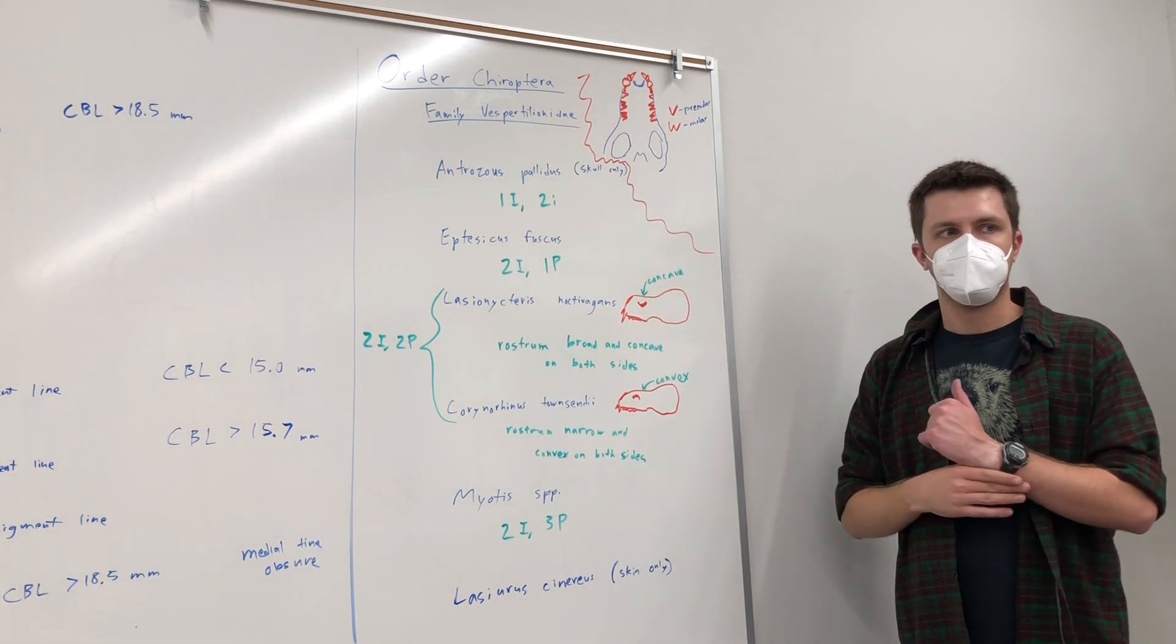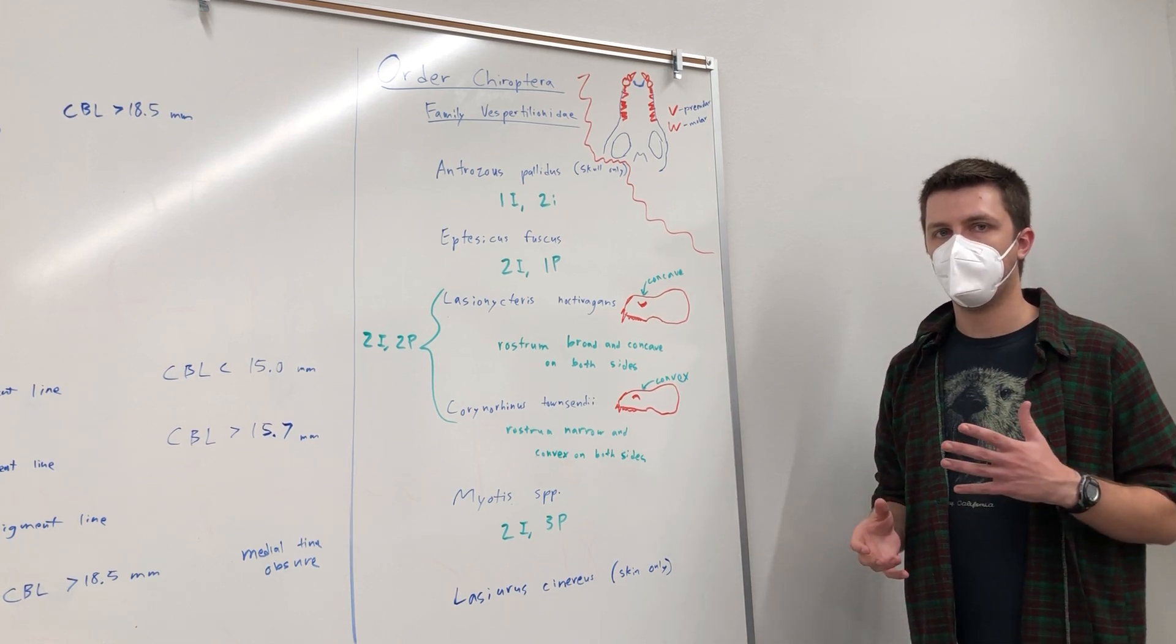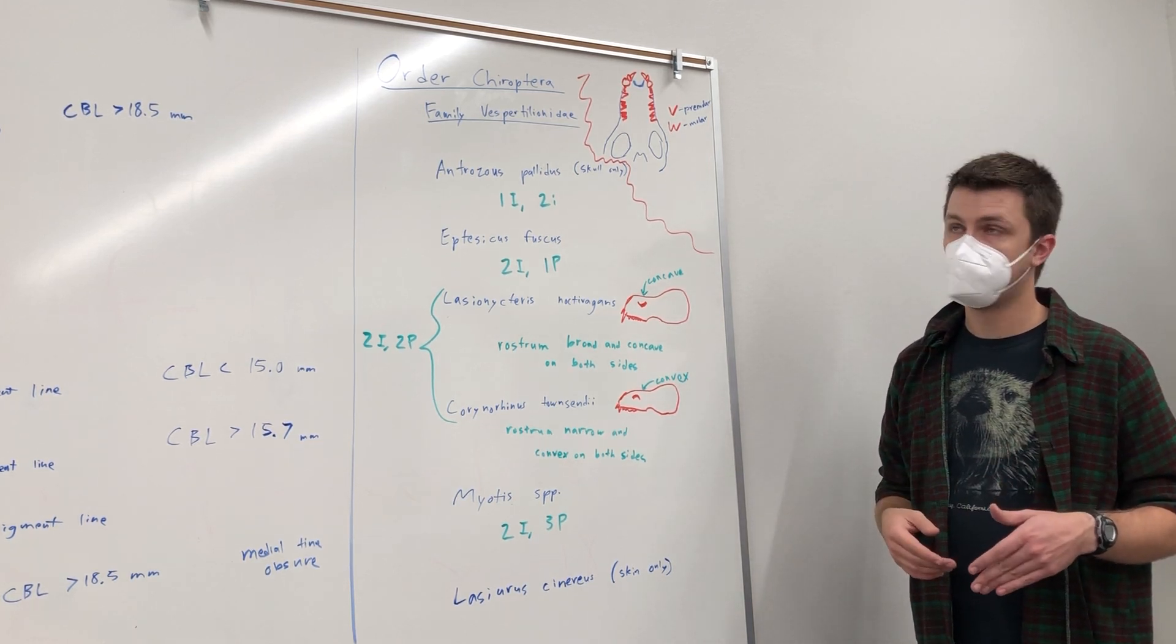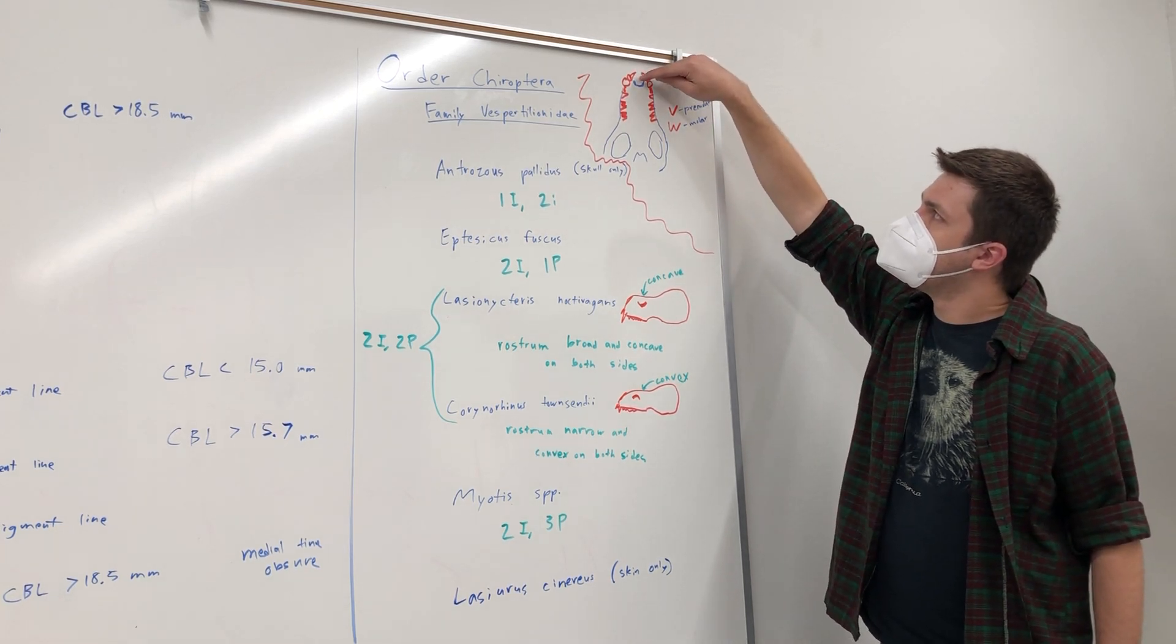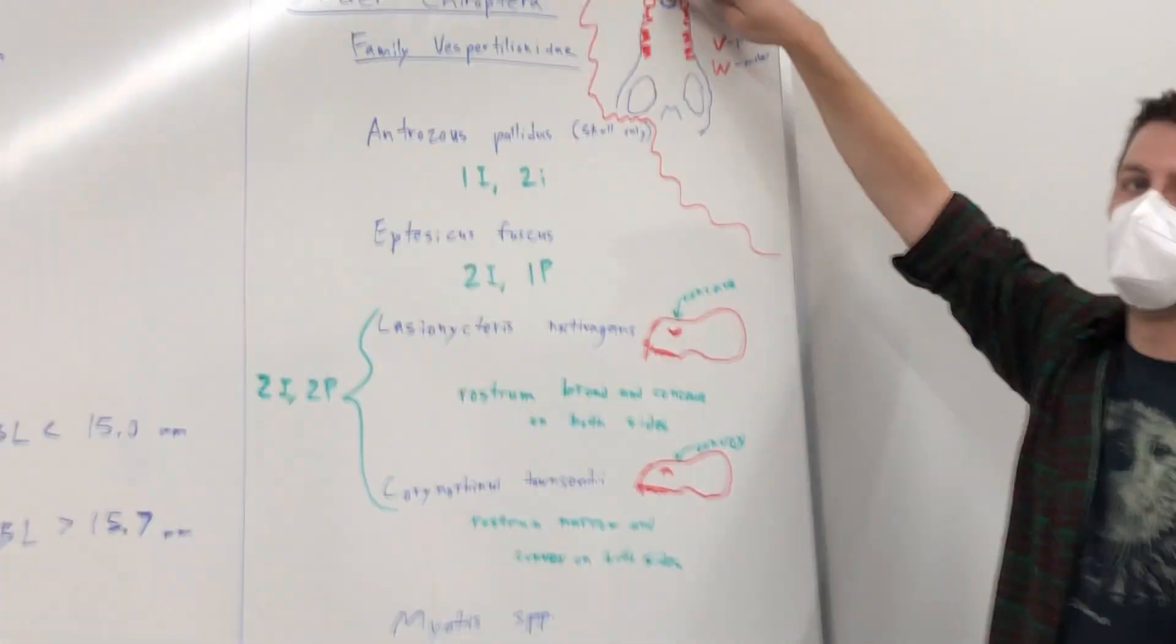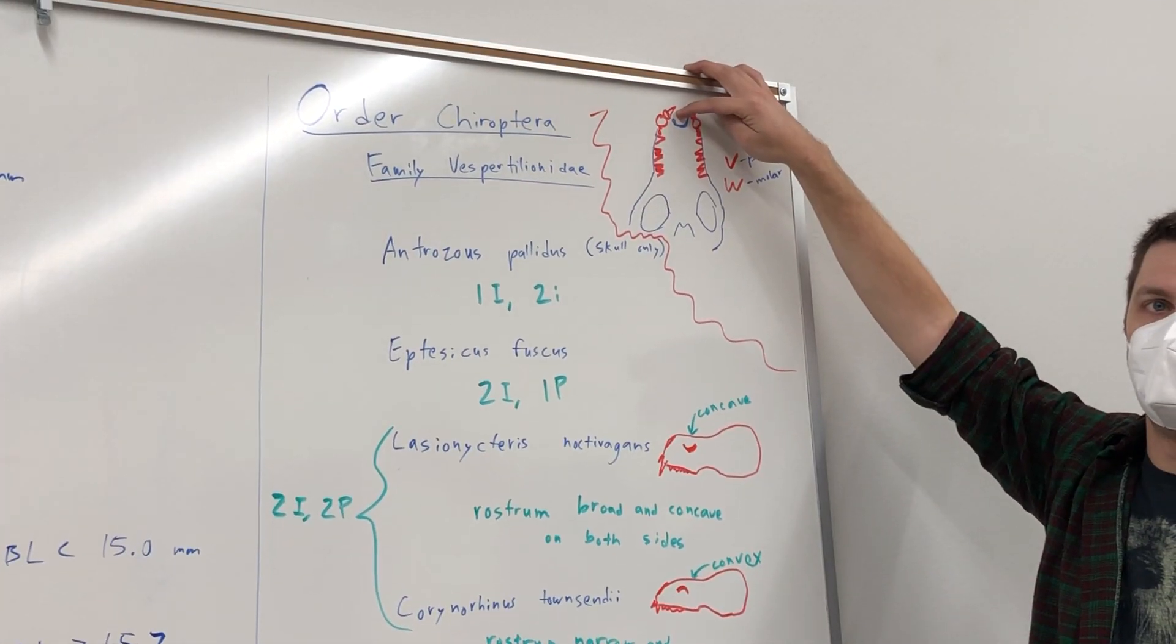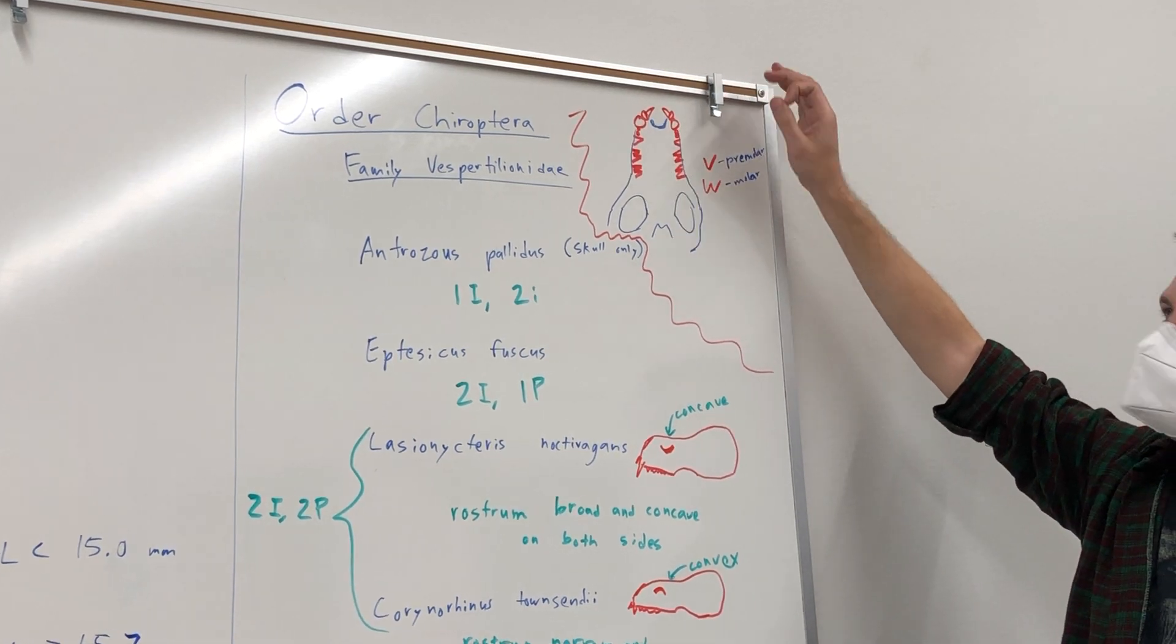Bat skulls have, well all of the Montana bat skulls have a similar pattern. They're all relatively small and they all have this kind of weird, looks like someone took a bite out of the front of the skull. Sometimes a wider gap than others depending on the species.